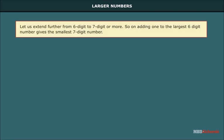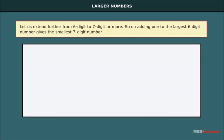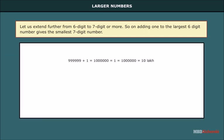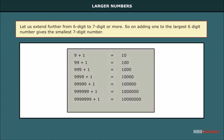Larger numbers. Let us extend further from 6-digit to 7-digit or more. So, on adding 1 to the largest 6-digit number gives the smallest 7-digit number. This is the number 10 lakh. Proceeding in the same manner, we get the smallest 8-digit number, this 1 crore. So, till now, we have studied the numbers from 10 to 1 crore.